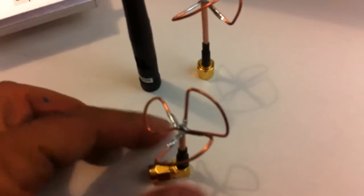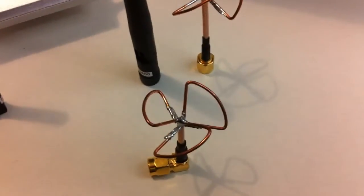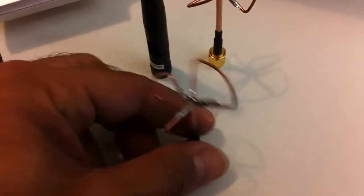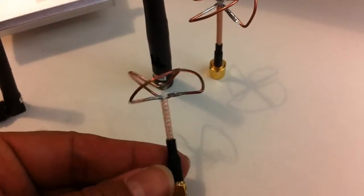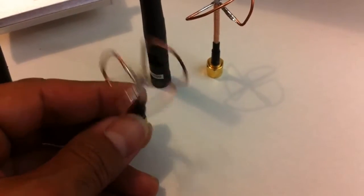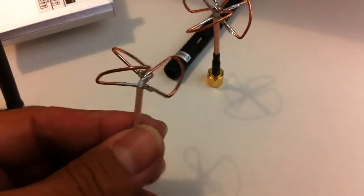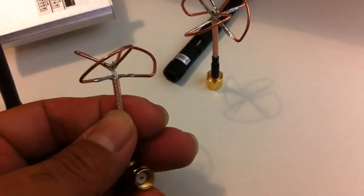So what you have here is the cloverleaf antenna and as you can see there are three clovers and it sort of gives you an idea of what it looks like.